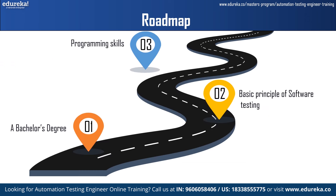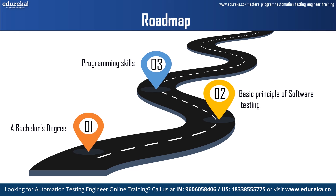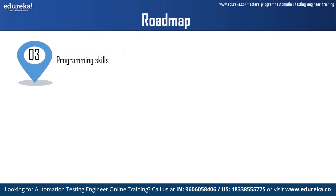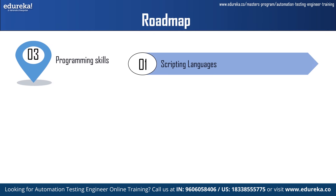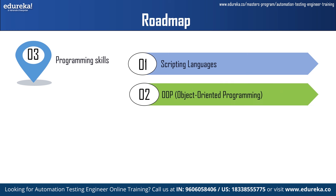Automation test engineers must have strong programming skills to create, maintain, and execute automated test scripts. Key programming skills include scripting languages such as Python, Ruby, and JavaScript, which form the foundation of many automation test tools and frameworks. Object-oriented programming languages — Java, C#, Python, and Ruby — are also important, as creating and manipulating objects is a common part of test automation. Understanding OOP principles helps in creating efficient and maintainable automation code.